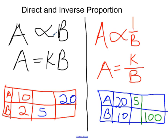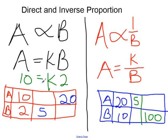Direct proportion works like this: as one value increases, the other increases, or as one value decreases, the other decreases. So if we replace a with 10 and b with 2, what could k be? If we divide both sides by 2 to get our k, k would be 5. So our constant of proportionality is 5.